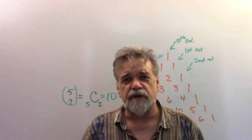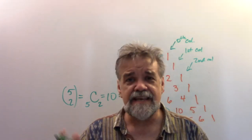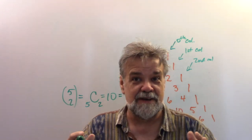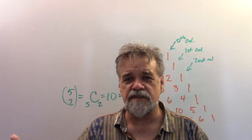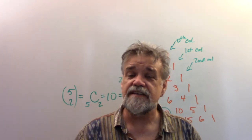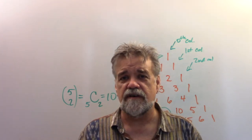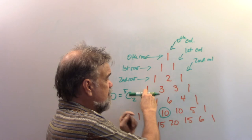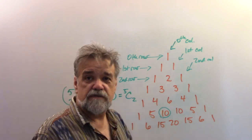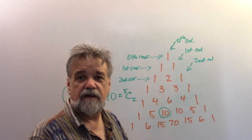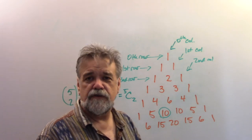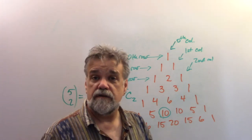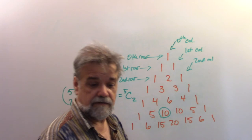Sir Isaac Newton, when he was at Cambridge and had to go home during the plague, analyzed this triangle and started figuring out what rows would look like in between the existing rows — like what the 'two-and-a-half row' would be. So if you're home because of COVID-19 wondering what to do, little Isaac did exactly that.